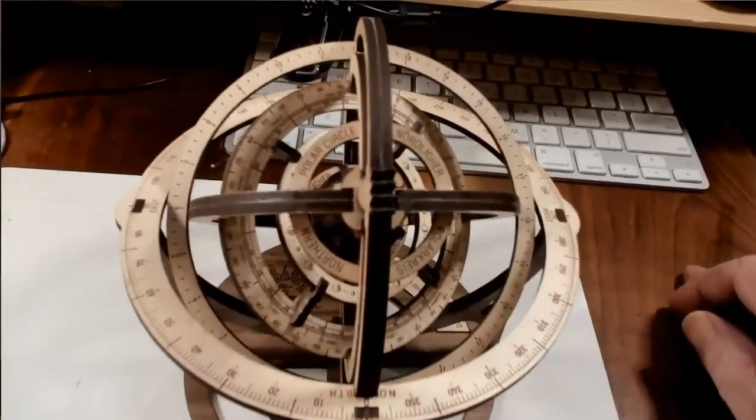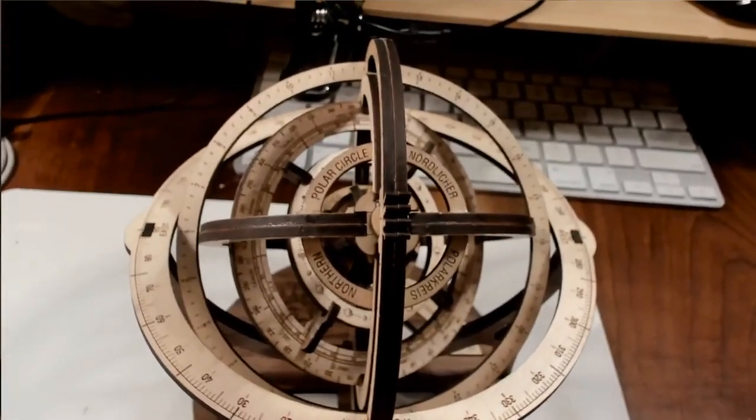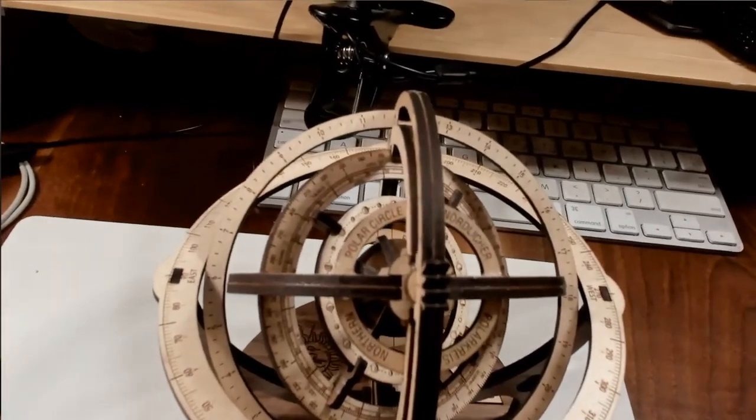Now during the construction of the armillary sphere from the kit there are a couple of pitfalls that you can have. Let me show you the first one now. Now when you are putting the kit together it's very important you have things lined up properly. Now just to give you a quick orientation.